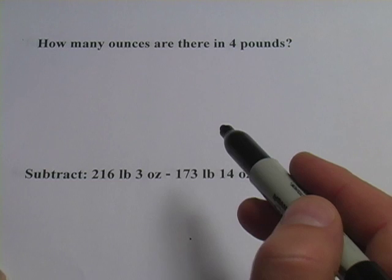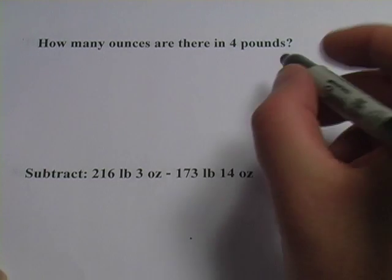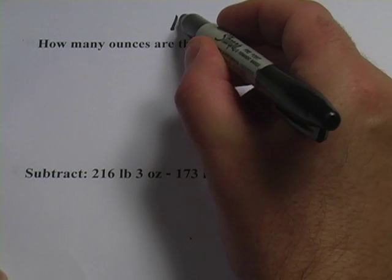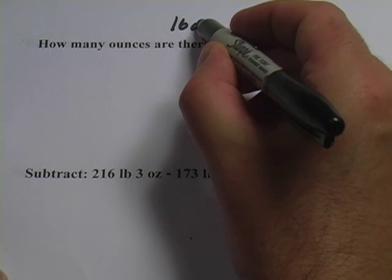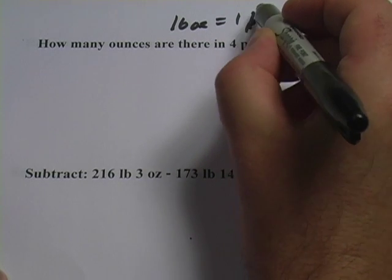The key fact you need to know is how many ounces are there in a pound. And if you don't know, it's 16. So, 16 ounces equals 1 pound. Actually, I guess we say lb for pound.